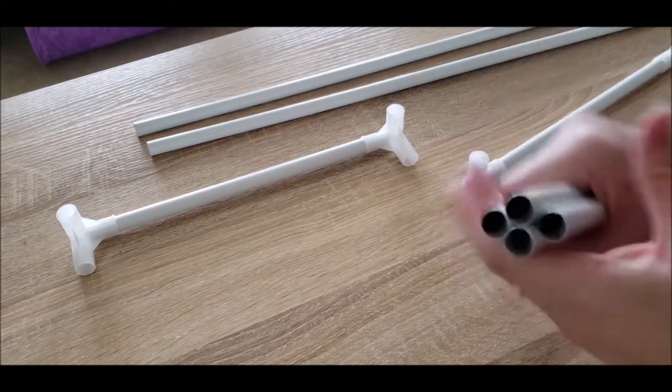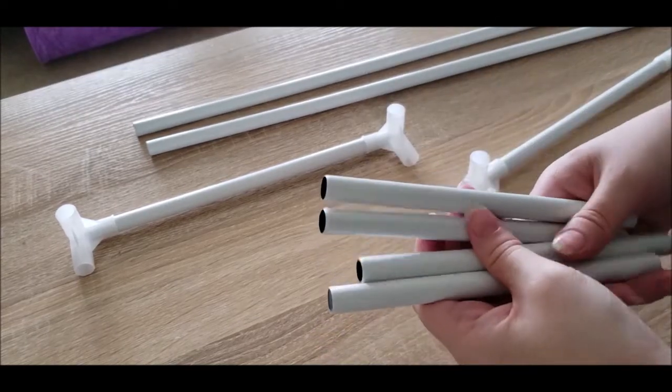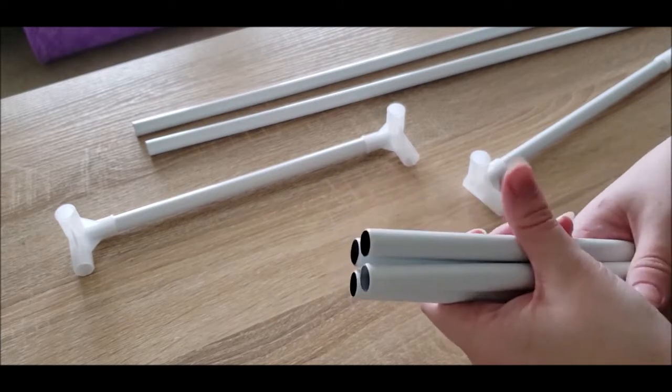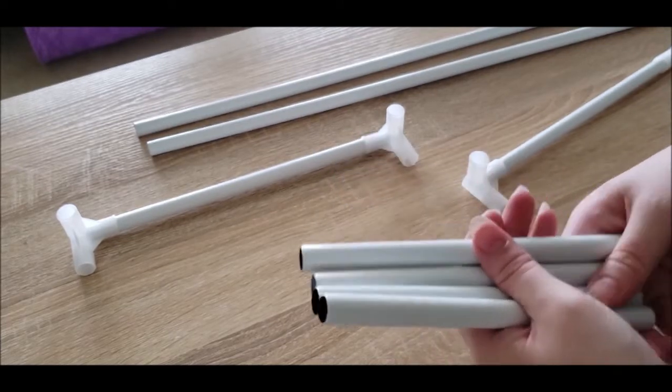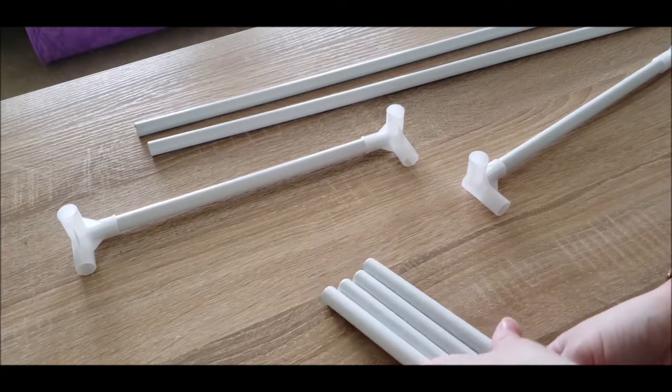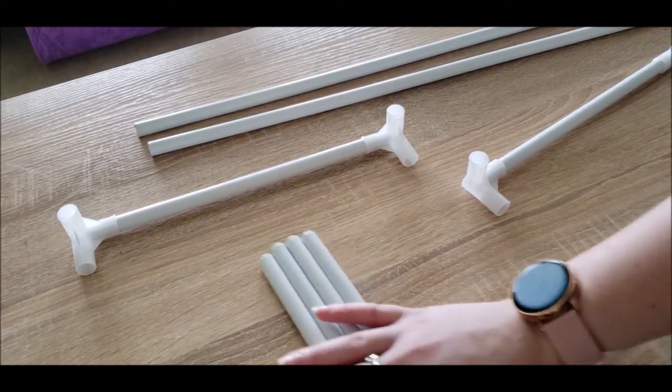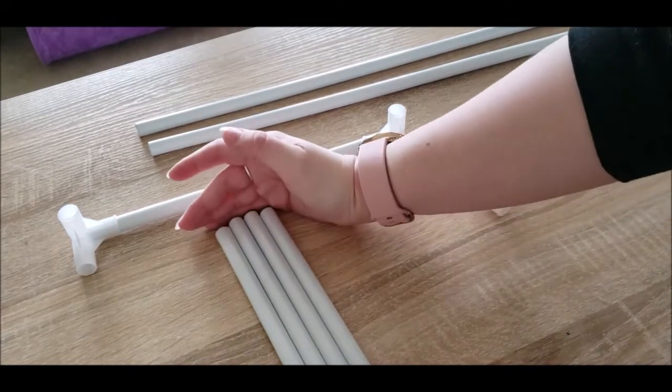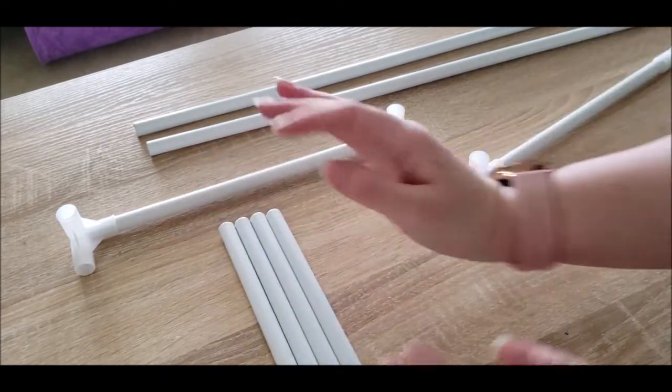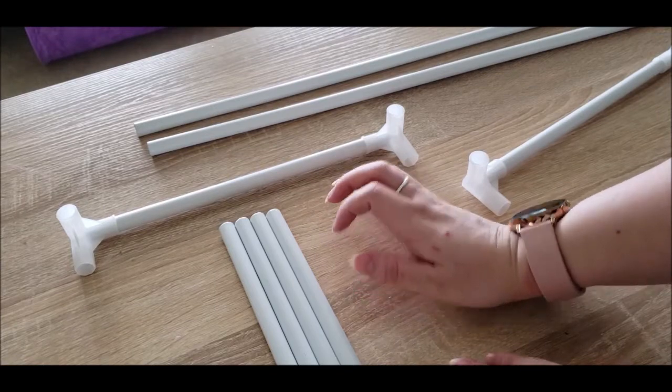So first things first, you're obviously going to need this metal piping. You can do it with metal, you can do it with plastic, it doesn't really matter as long as it's sturdy and you need three different sizes or cuts. So these are going to be our legs. You're going to need four of these obviously so that it stands on all four legs and these are about six and a half inches.